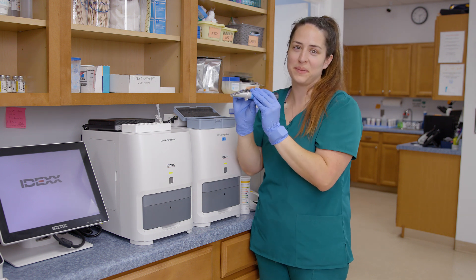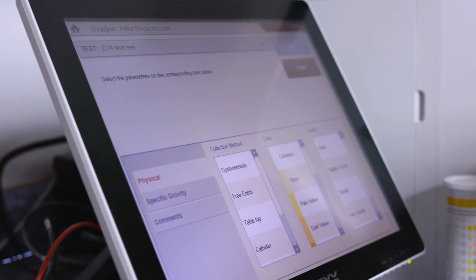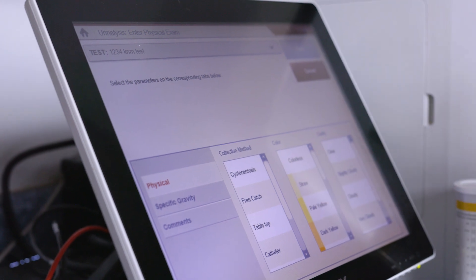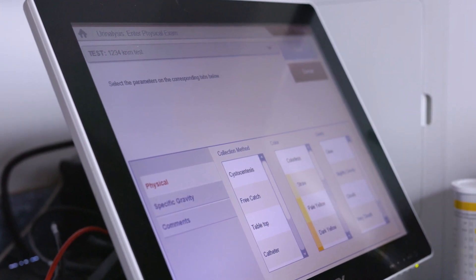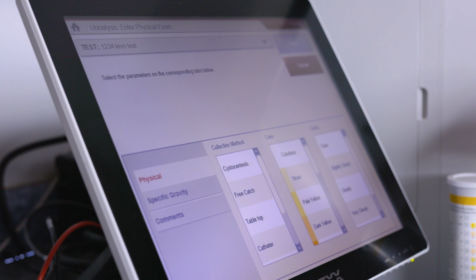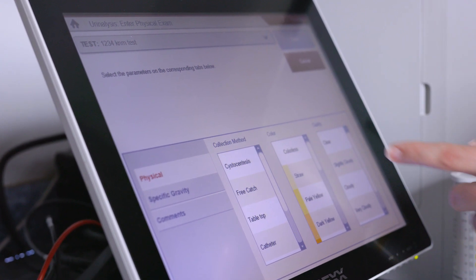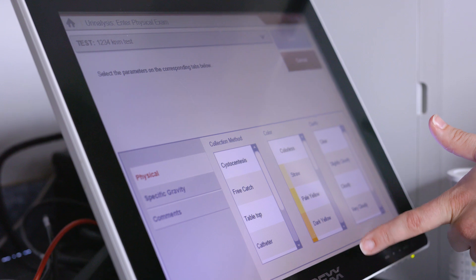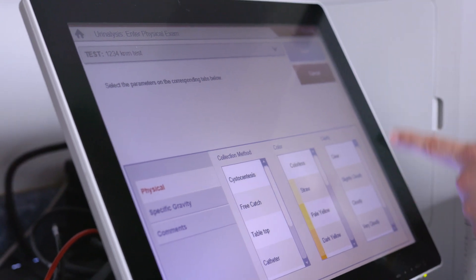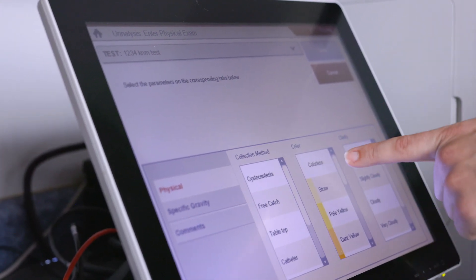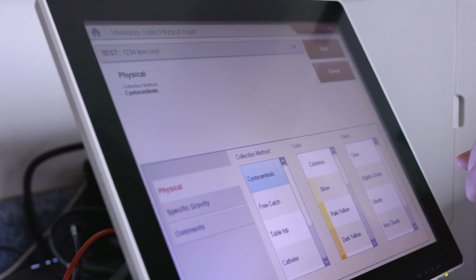When we're running our urinalysis on our IDEX station or on any of our machines, or if we're running it manually, we do want to make sure we note in the medical record a few different things. So the collection method of our urine sample, what the color is and what the clarity is. For this sample, we did it by cystocentesis.